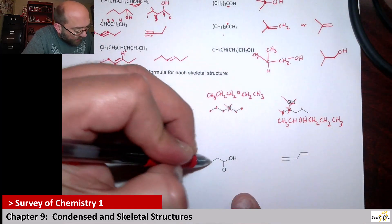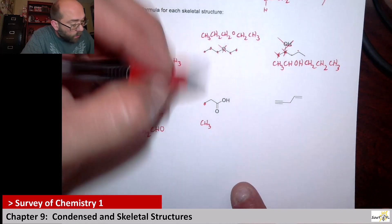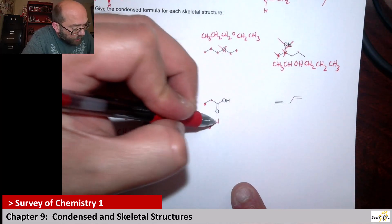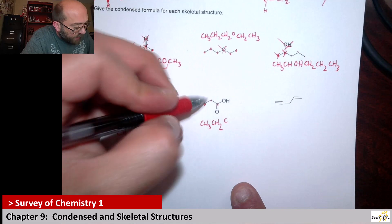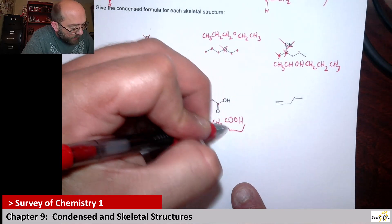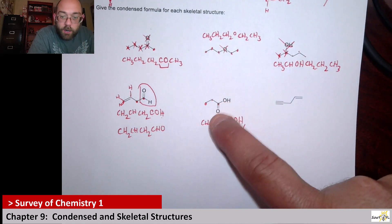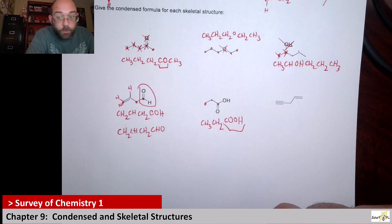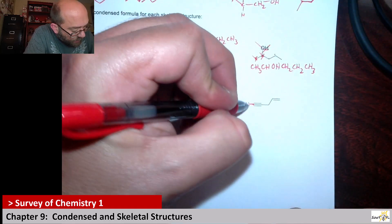Here we've got CH3, then CH2, and then a carbon with a double-bonded oxygen and an OH. This right here is highly indicative of the condensed form of a carboxylic acid functional group.